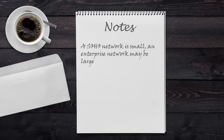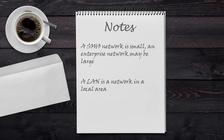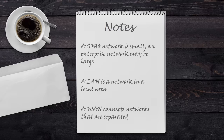Let's take a moment for a quick summary. All networks are different, and this includes their size. A SOHO network is very small, while an enterprise network may be very large. Your network could fit in anywhere in between. A LAN, or local area network, is a collection of network devices in a local area, like a single building. A WAN, or Wide Area Network, connects networks that are far apart.